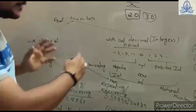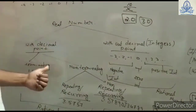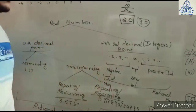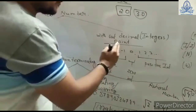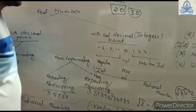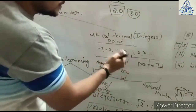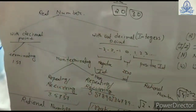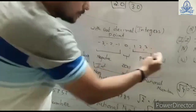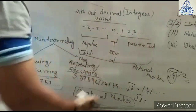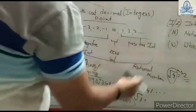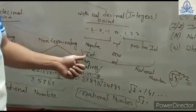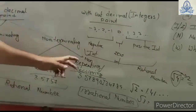Real numbers can be divided into two parts: with decimal point and without decimal point. Numbers without a decimal point are called integers — these include 0, positive integers (+1, +2, +3) and negative integers (-1, -2, -3). The positive numbers are called positive integers, 0 is the zero integer, and numbers with a negative sign are called negative integers.